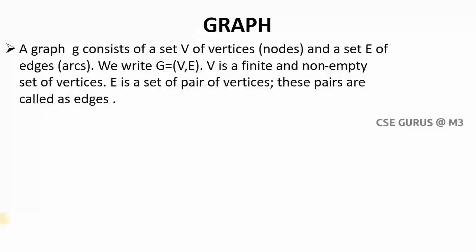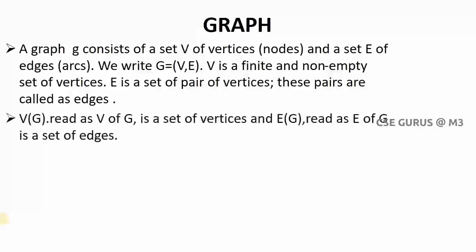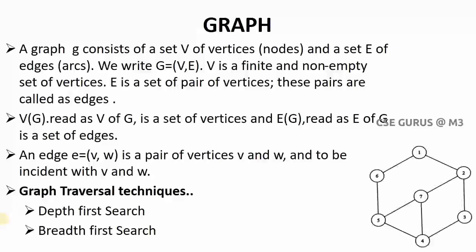A graph G consists of a set of vertices and a set of edges. We write this as G(V, E). We know the basics of this — let us take one example. So I can say a graph consisting of vertices; totally seven vertices are there, then we have edges E. Edges means a connection of two vertices. So for each edge, two ends will be two vertices. We write graph G equals to V, E — V means set of vertices and E means set of edges. Combined, you call it as a graph.